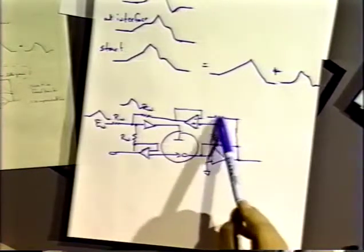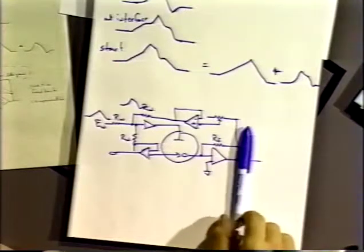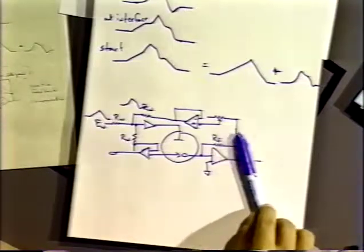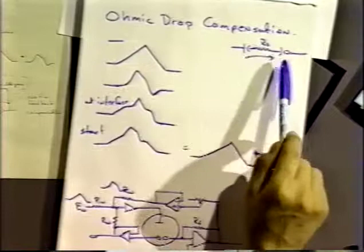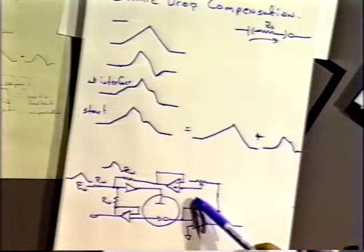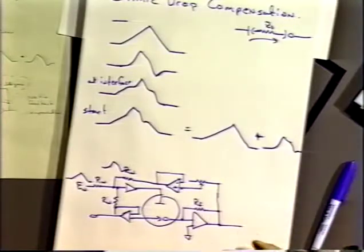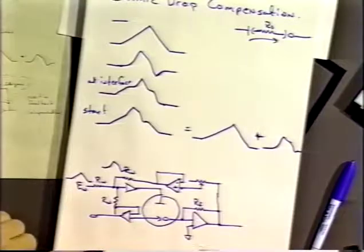There are a couple of problems. One is knowing what the exact fraction should be to avoid oscillation — usually you don't know. You have to vary the amount on the resistor a little bit until you start to see the beginning of oscillations; the signal starts to look noisy on the scope, and you can back it off. The other way is if you know exactly what the uncompensated resistance through the solution is, you can set it to 80 or 90% of that solution resistance. Some potentiostats have a built-in way of generating that number and can automatically accept the feedback compensation value.